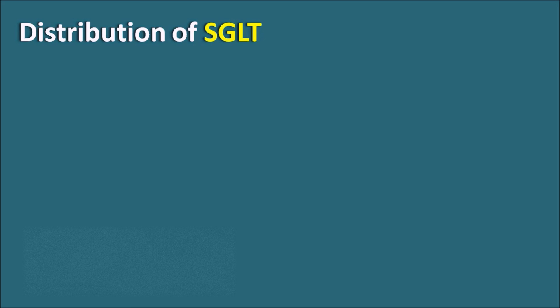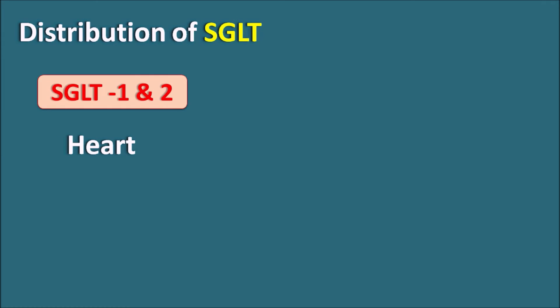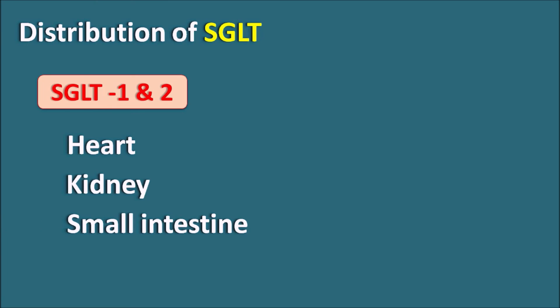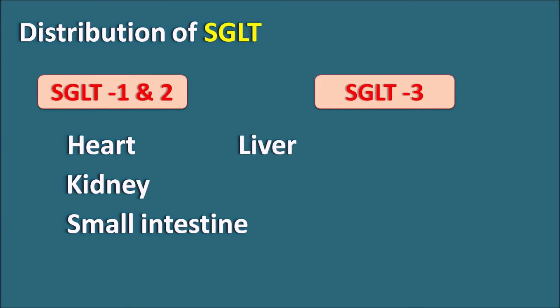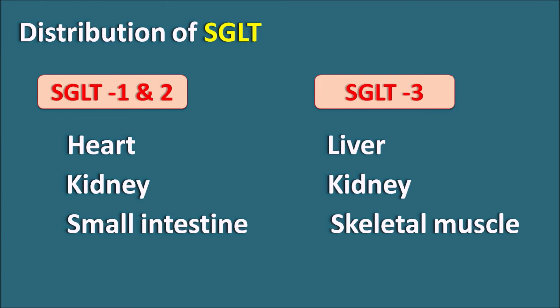Now let us see the distribution of SGLT transporters. SGLT1 and SGLT2 are involved in glucose transport at the heart, kidney, and small intestine. SGLT3 is important at the liver, kidney, skeletal muscle, and small intestine — similar distribution to GLUT2. All SGLT transporters require sodium along with glucose for cotransport. SGLT4 and SGLT5 do not transport glucose; instead they transport other molecules like thyroid hormones and inositol.